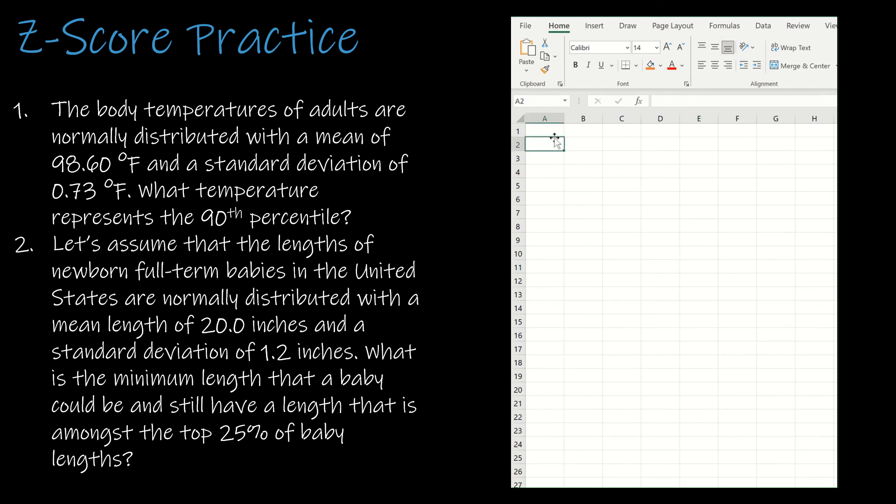For the first question, we have that the body temperatures of adults are normally distributed. We're looking for the temperature that represents the 90th percentile. Remember, the 90th percentile means 90% is to the left of that value. So I'm going to use NORM.INV. NORM.S.INV would give me the z-score, but NORM.INV is going to give me the actual value. I'm going to enter the probability, and that's 90th percentile, so 0.9 to the left. The mean is 98.6, and the standard deviation is 0.73. So what temperature represents the 90th percentile? 99.536 degrees.